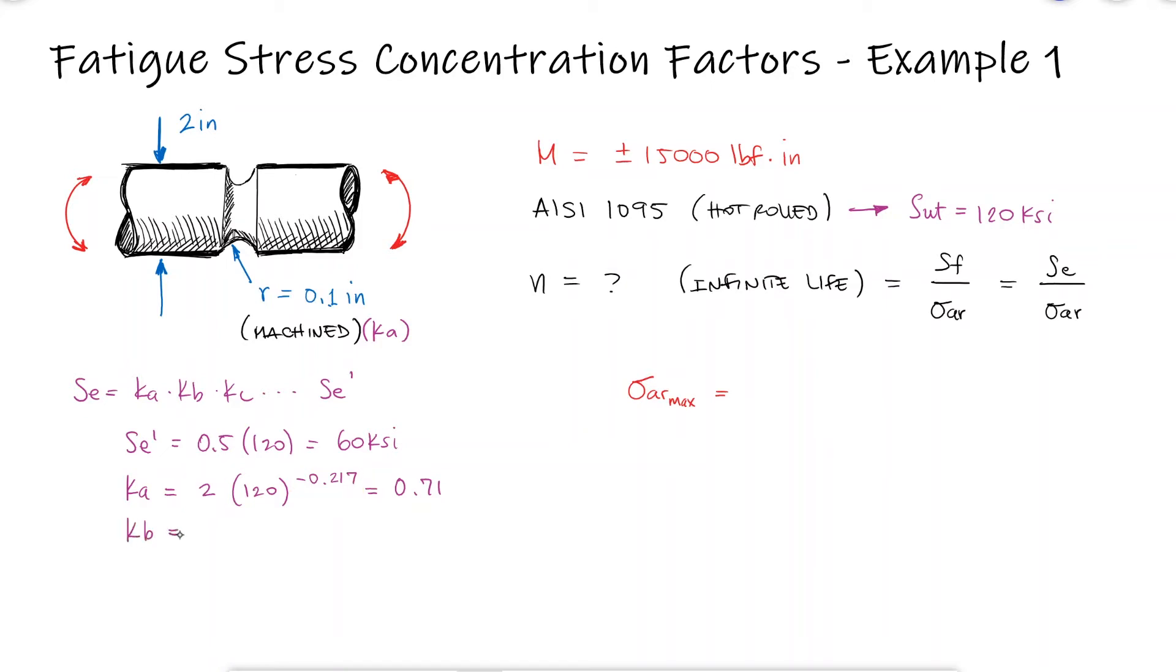For the size factor KB, we first need to calculate the equivalent diameter, since this round bar is not rotating, and the diameter we use is the smallest diameter at the groove. Since the round bar is subjected to bending, Kc is equal to 1.